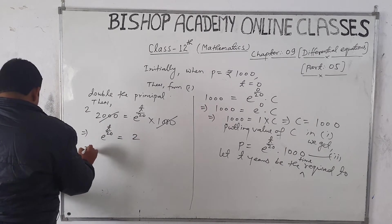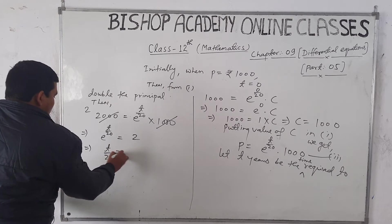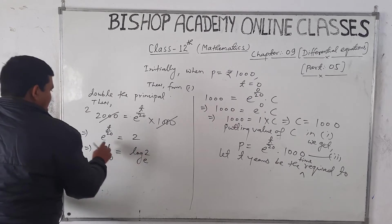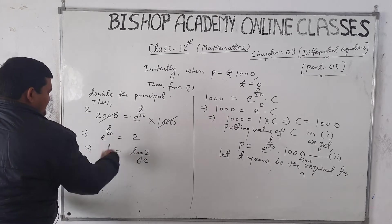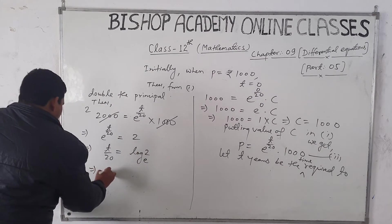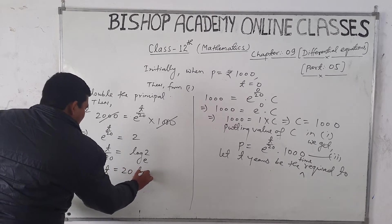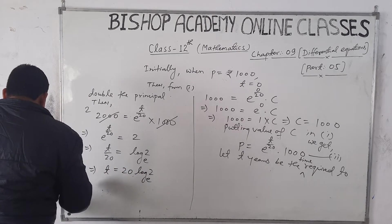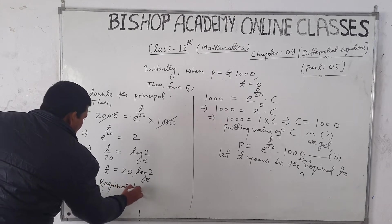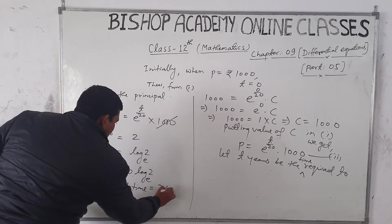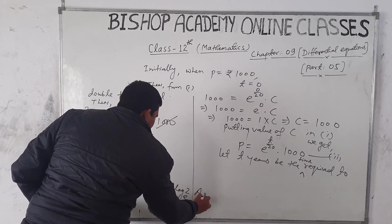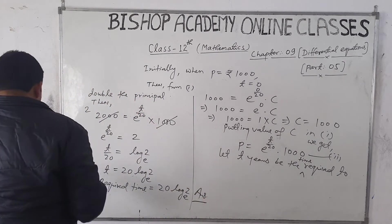From e^(T/20) = 2, taking log on both sides: T/20 = log_e(2). Therefore the required time T = 20 log_e(2) years.